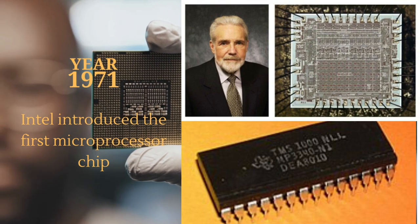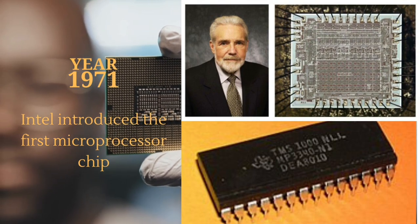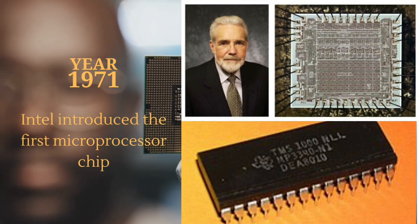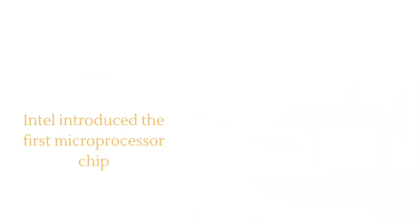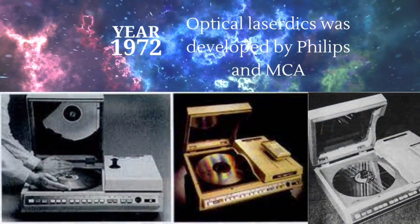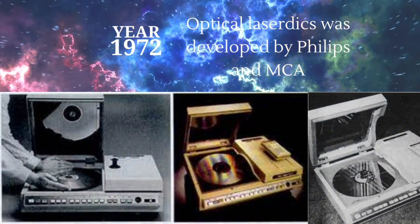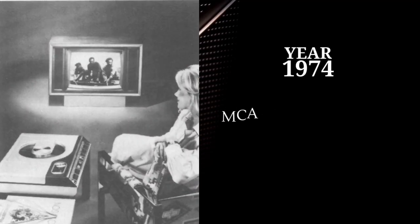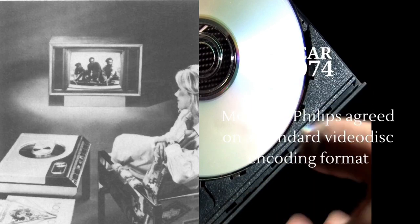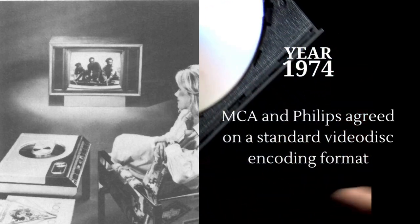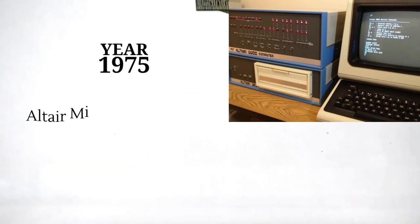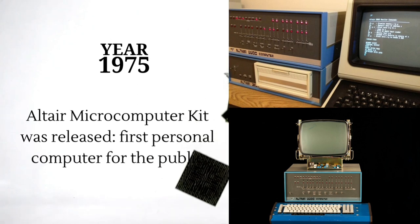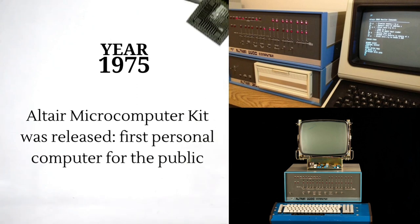The first microchip was created in January 1971 by a team of logic architects and silicon engineers: Federico Faggin, Marcian Hoff, Stanley Mazor, and Masatoshi Shima. MCA and Philips developed laser technology for distributing consumer movies, and together developed the optical disc in September 1974. In 1975, the Altair microcomputer kit was released as the first personal computer for the public.